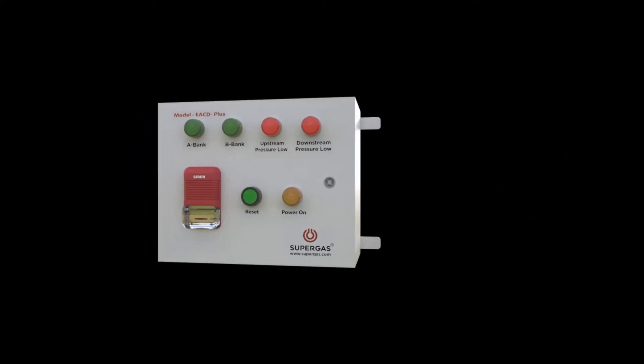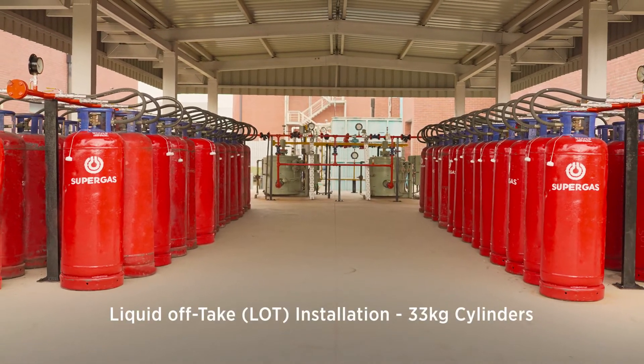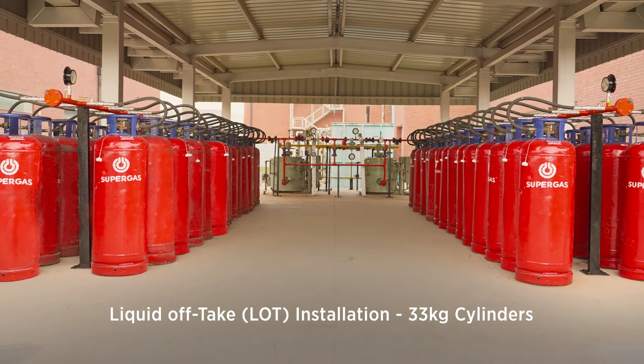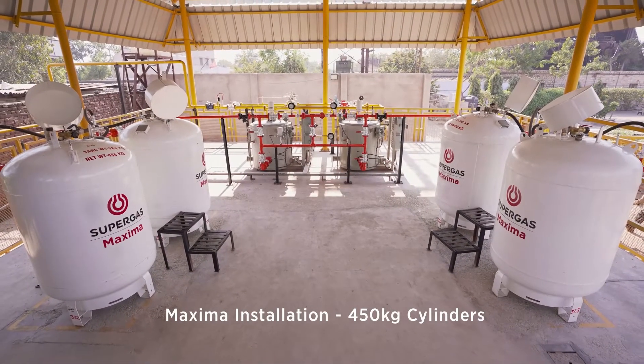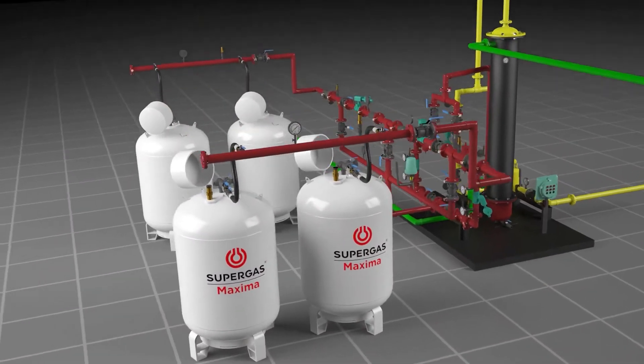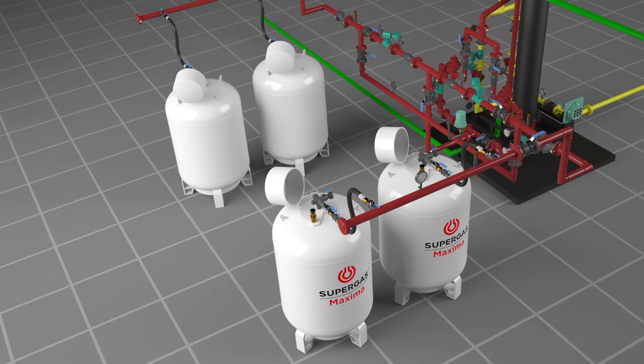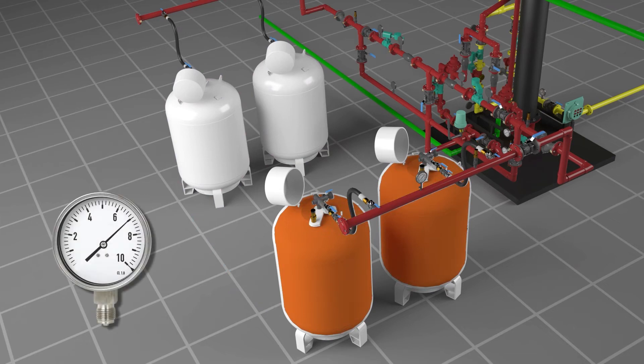The system is designed to be used in L.O.T., i.e. Liquid Optic Cylinder Installations of 33 kg and Maxima Installation 450 kg cylinders. The EACD Plus is an automated device that switches from an empty LPG cylinder bank to a filled bank. It happens when the cylinder bank is completely utilized and the pressure drops below 0.5 bar.